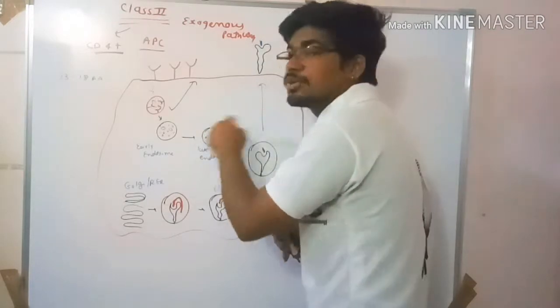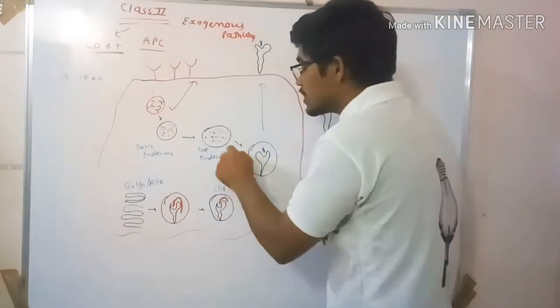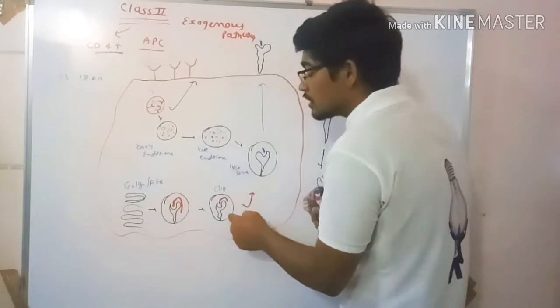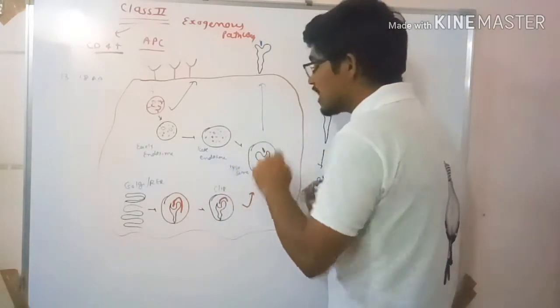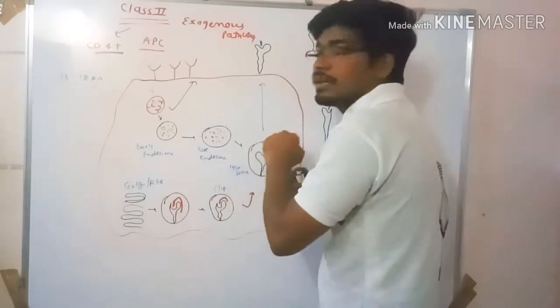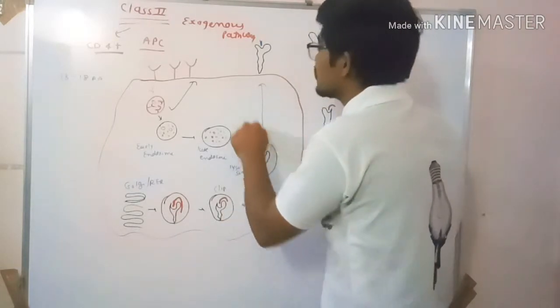After small peptides form, it goes to the lysosome where both class 2 MHC and the antigenic peptide meet and exchange the clip to our peptide. This is then presented onto the APC molecule and presented to the CD4+ T helper cell.